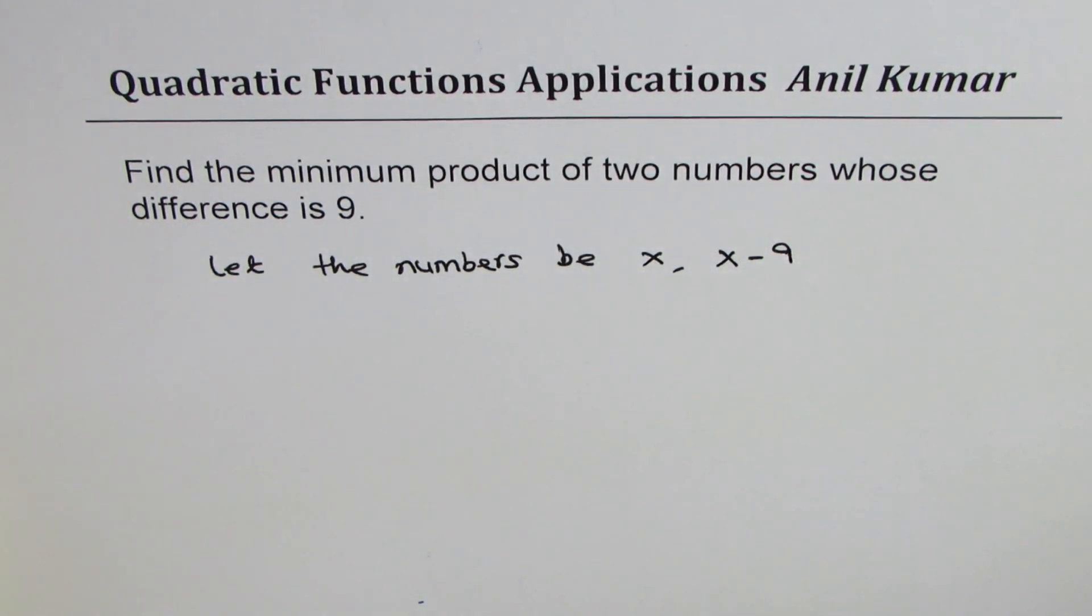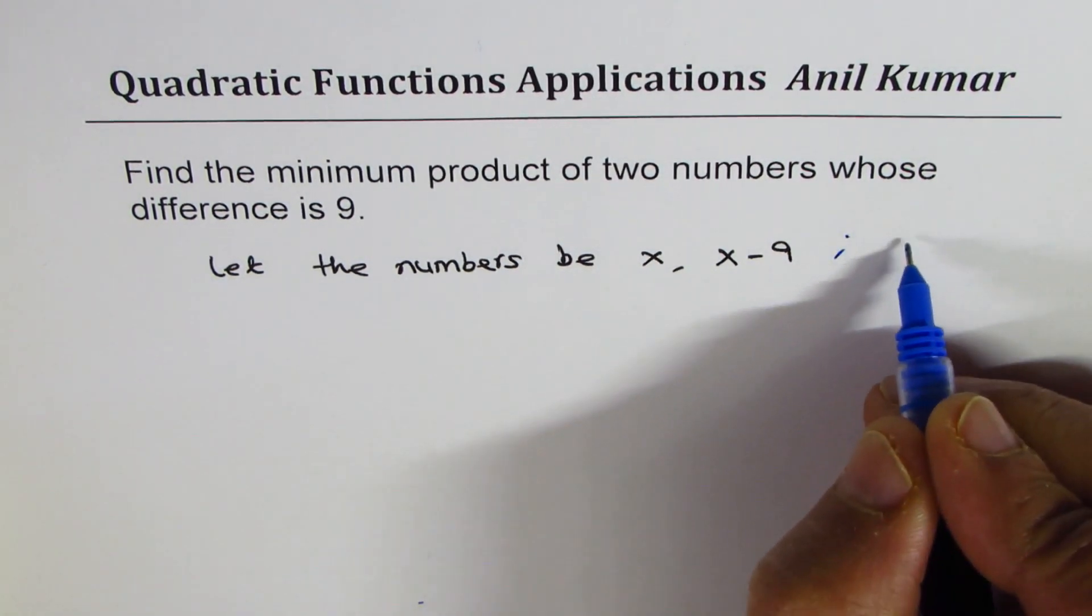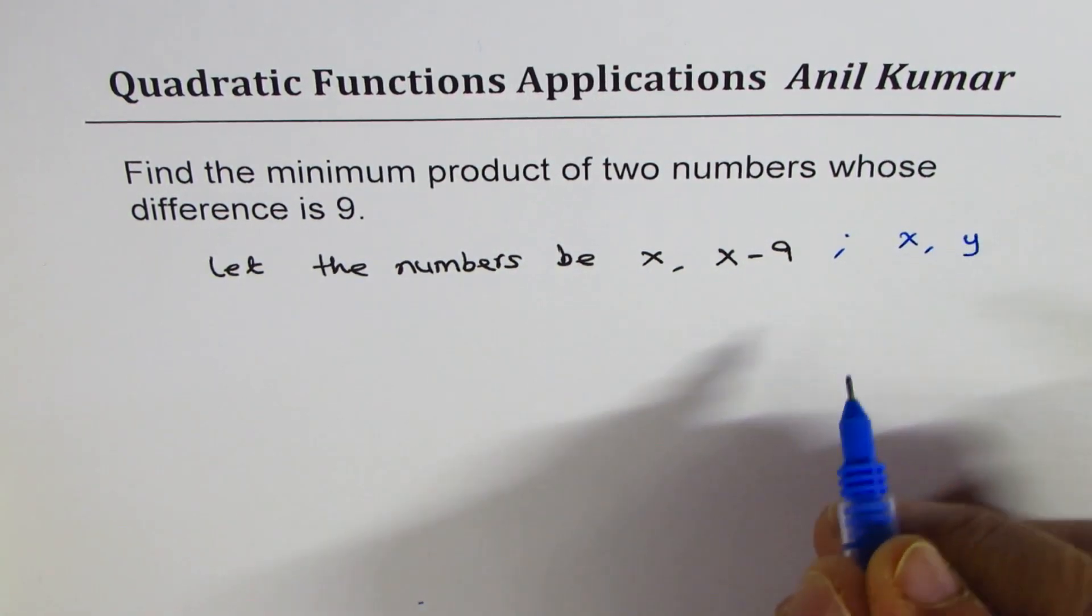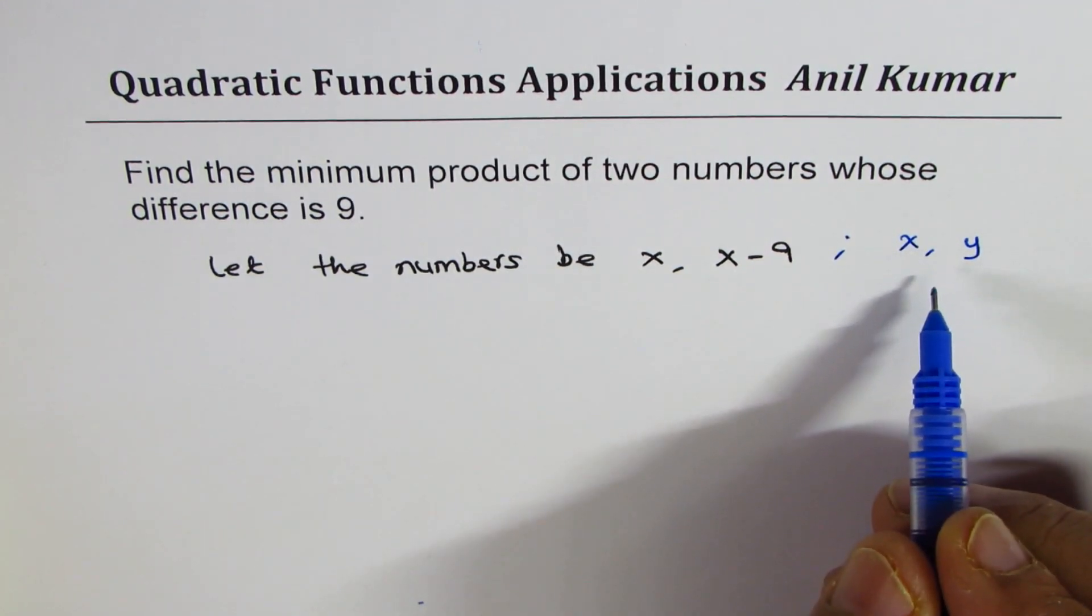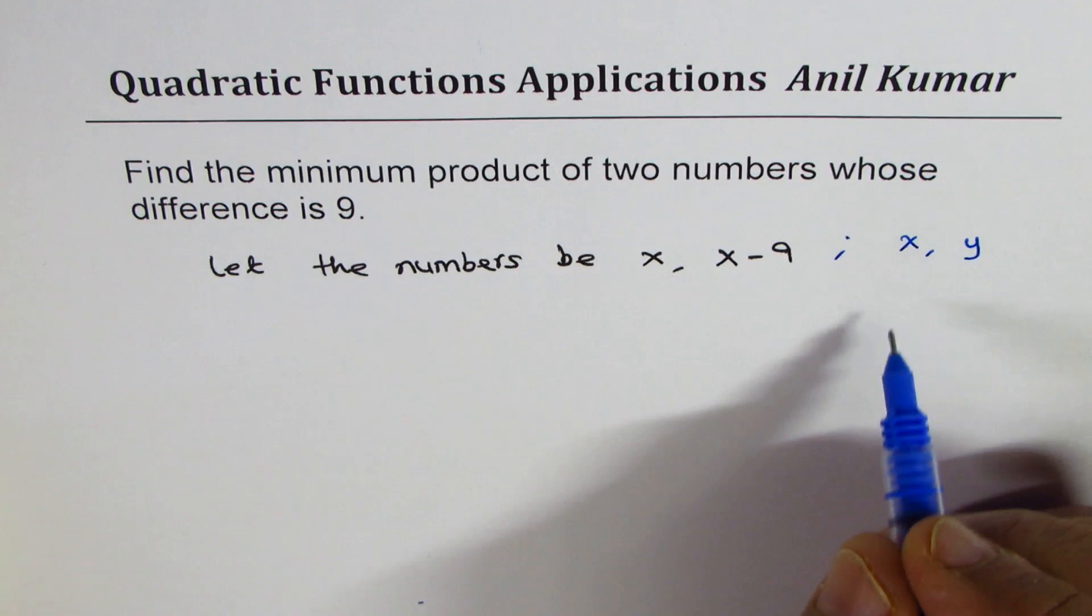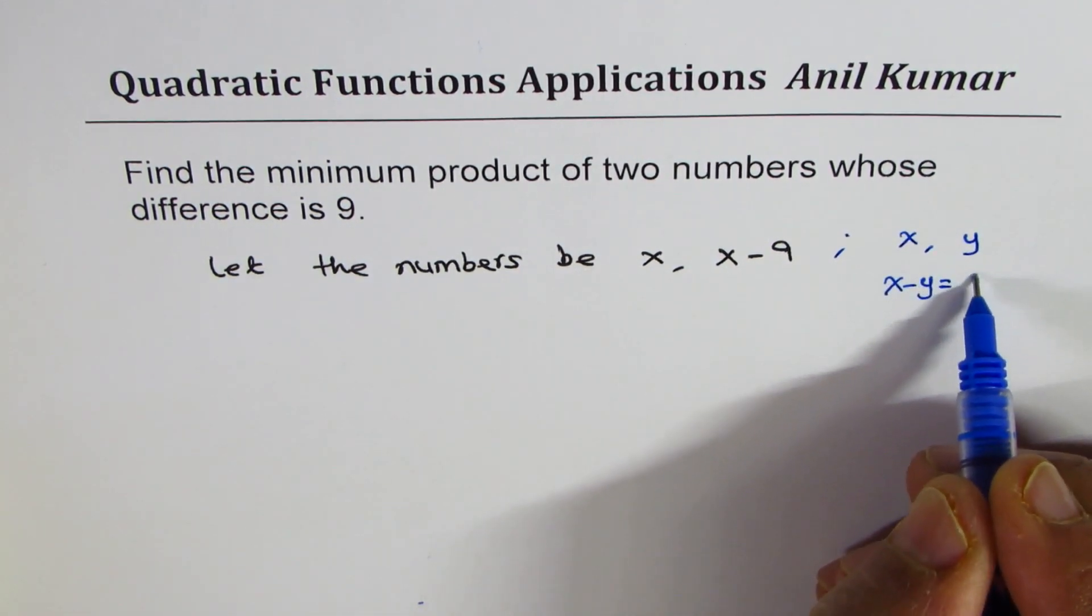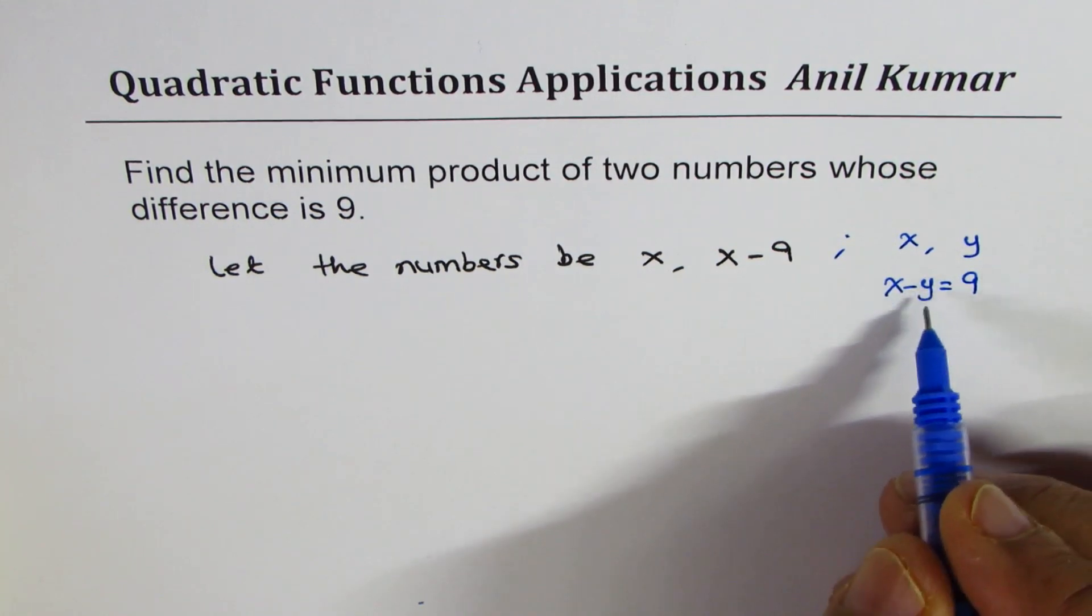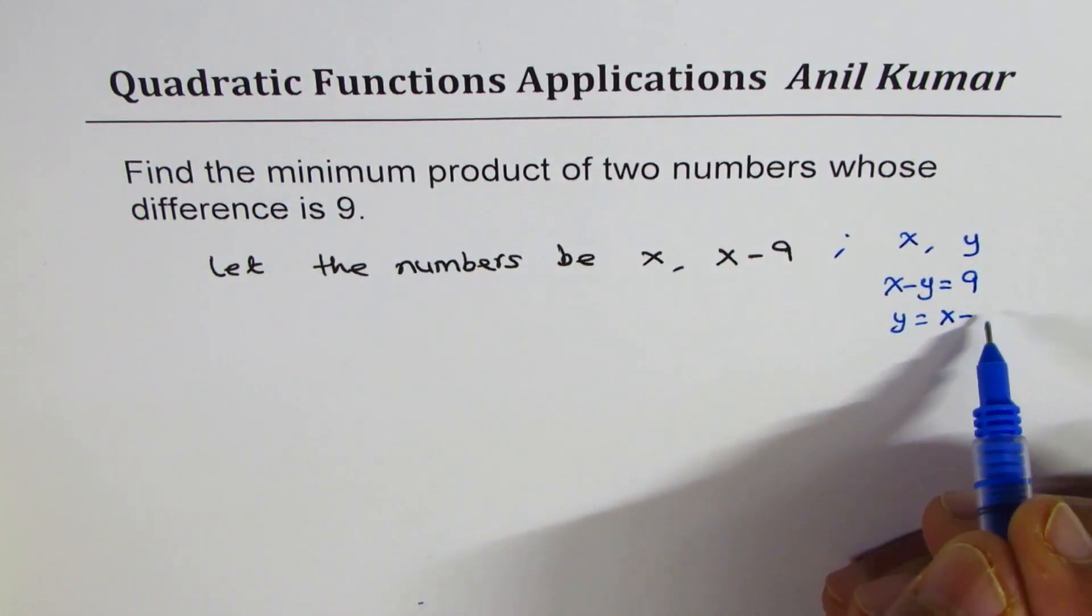Now when you define variables, you could define variable like X and Y and then you could say difference of these two numbers is 9. So you can say X minus Y equals to 9 and then you can say Y equals X minus 9.